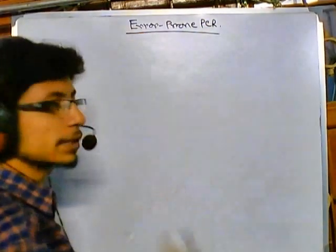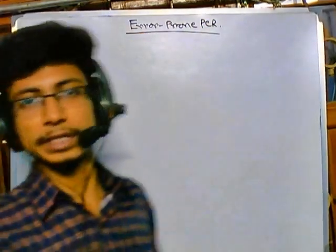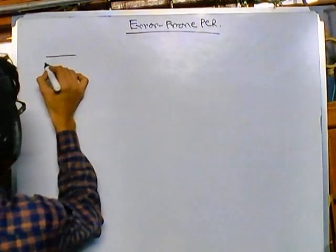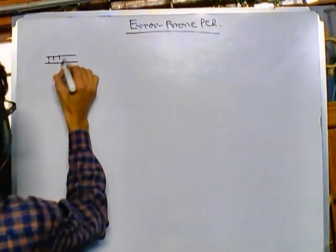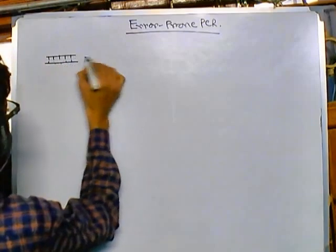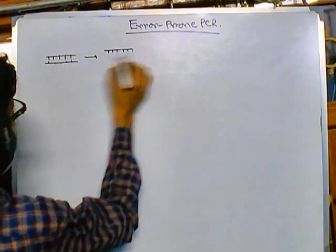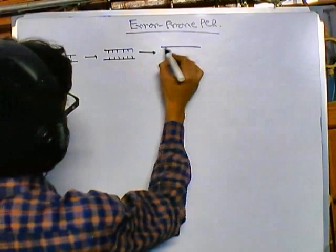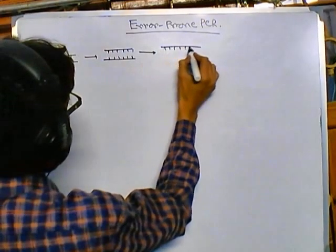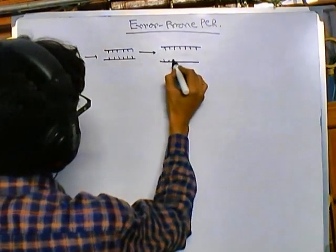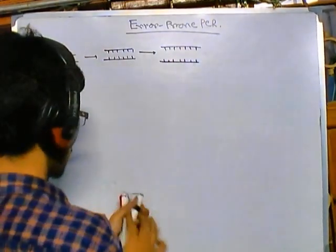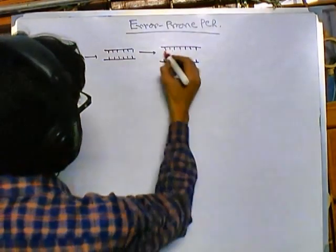I assume that you know the basics of polymerase chain reaction, which I am drawing again. A DNA strand is placed and the strand is melted. After melting, we simply add forward and reverse primers.